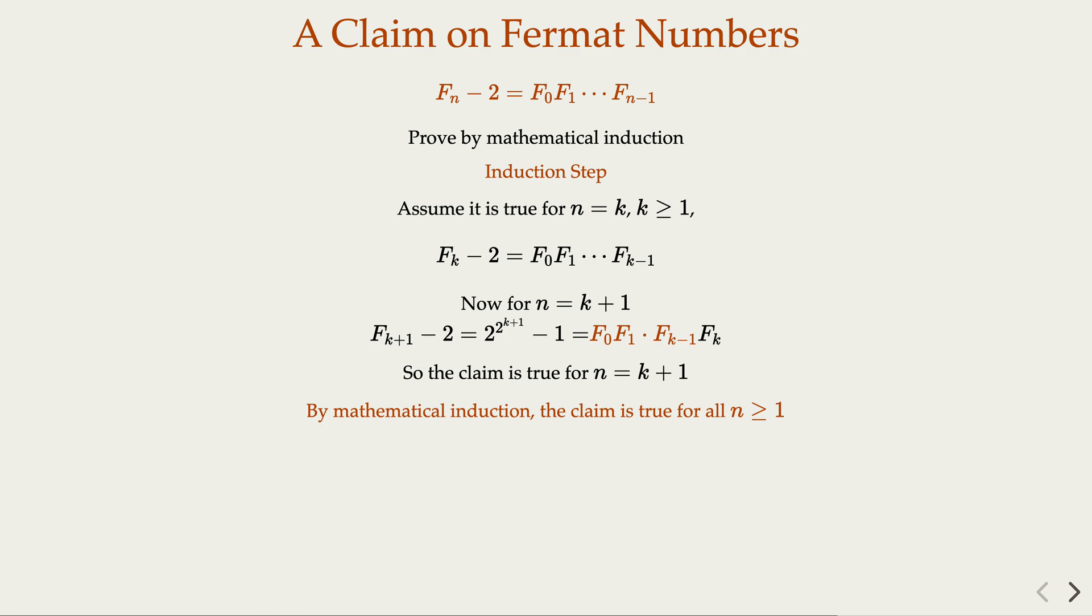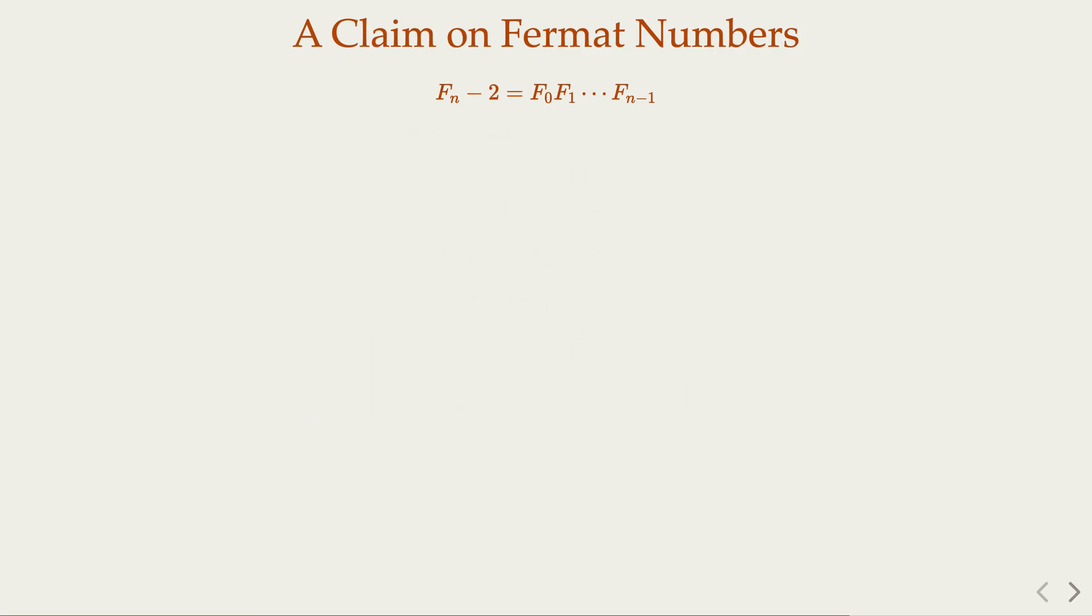So we have this statement. How do we prove that two Fermat numbers are relatively prime? Now think about it. Fn is related to all the Fk for k less than n. We claim that they cannot have any common prime factor.